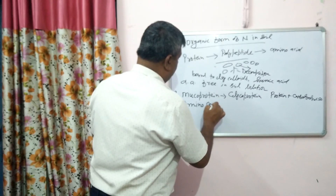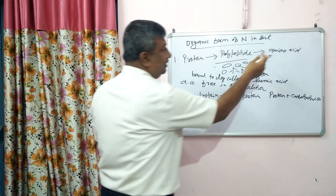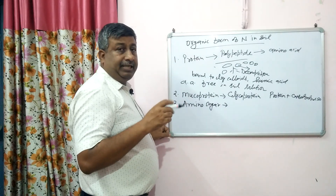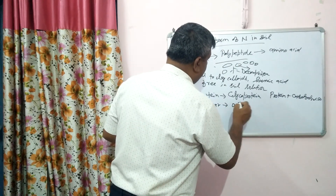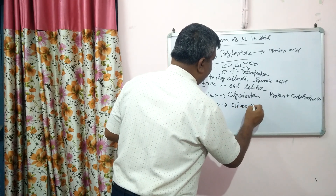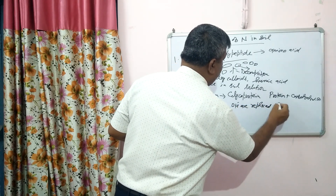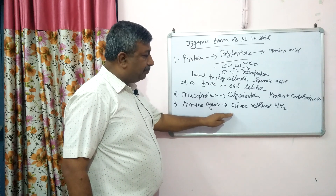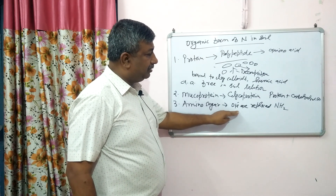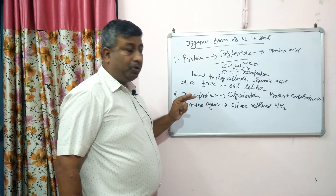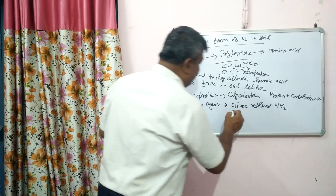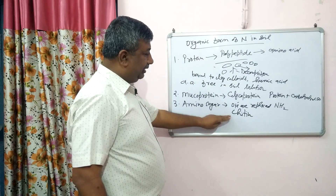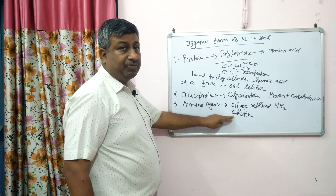In the case of amino sugar, an amide group is present in a sugar. The hydroxyl ions in the sugar are replaced by this amide group, forming what is known as amino sugar. A very good example is chitin. Chitin is an amino sugar and is an important cell-wall structure in the case of fungi.